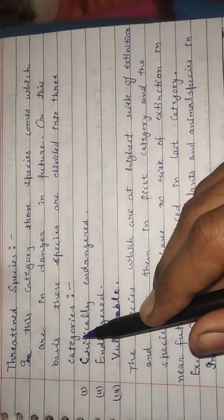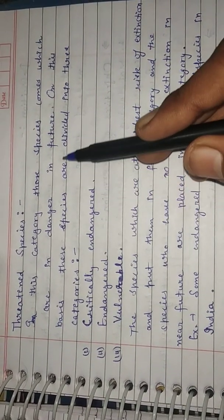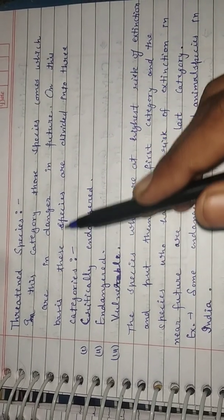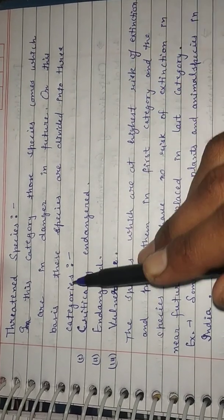Threatened species. In this category, those species come which are in danger in future. On a basis, these species are divided into three categories.